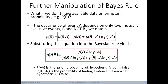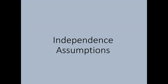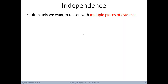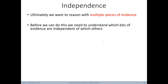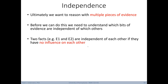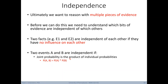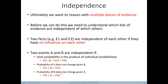Let's think about the impact of independence assumptions in probability calculations. We start thinking about independence when we want to reason with multiple pieces of evidence. Two facts, E1 and E2, are independent of each other if and only if they have no influence on each other. Formally, two events A and B are independent if their joint probability is the product of their individual probabilities, or the probability of A does not change given the evidence B — meaning the probability of A given B equals the probability of A alone. Similarly, the probability of B given A equals the probability of B. If all three conditions are satisfied, A and B are independent.